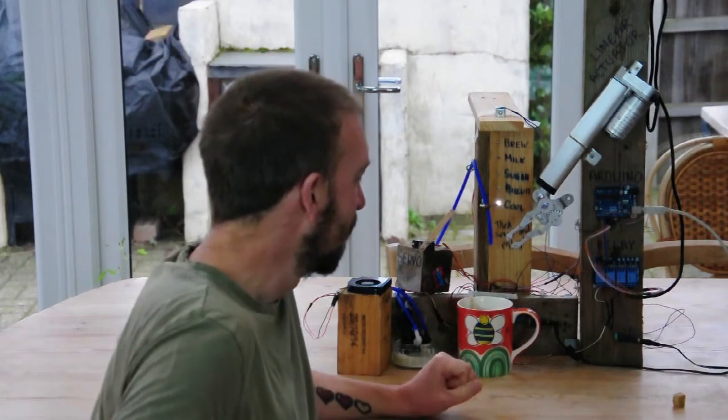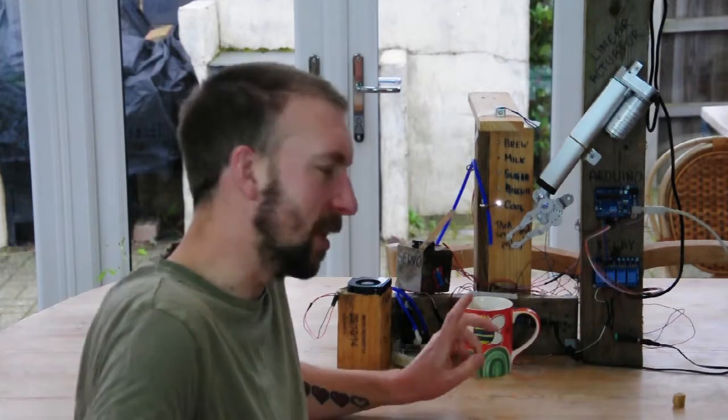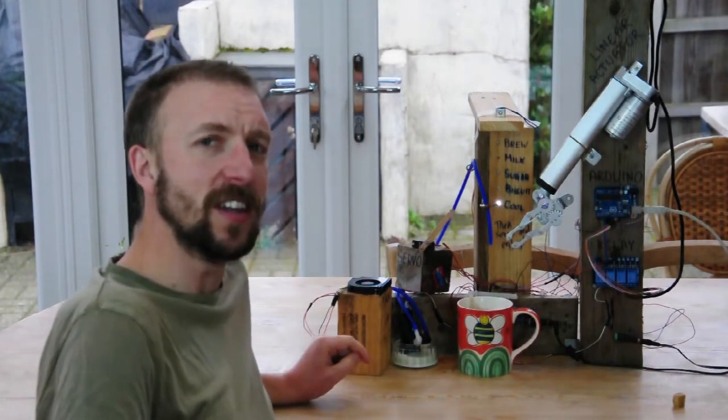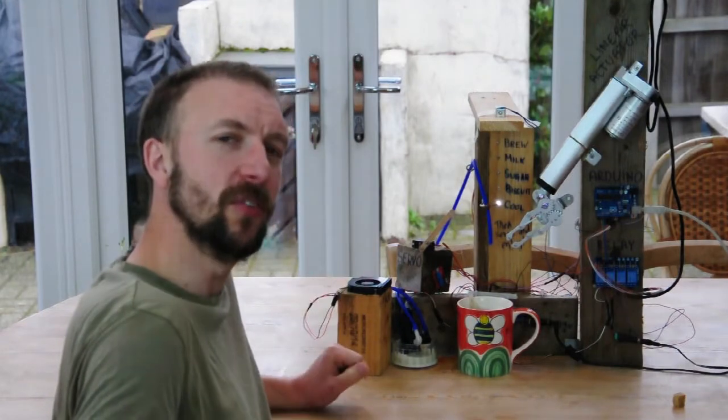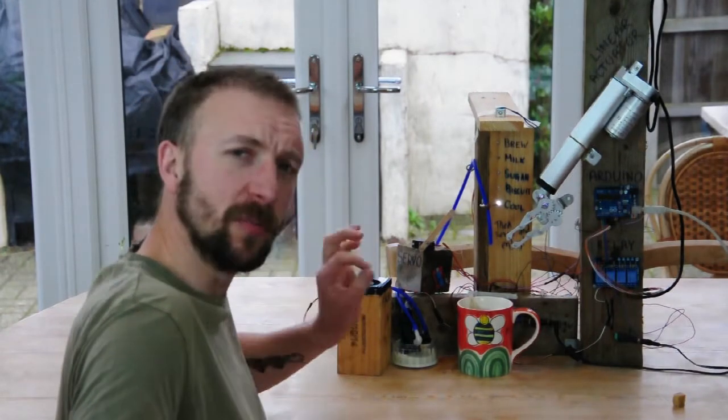And what you'll find is that the tea is still a little bit too hot to drink at the moment. So we just need to cool it down. That's where this fan here comes in that I stole from a laptop. Just gives a couple of puffs of air over the top of the mug to get it to the optimum drinking temperature.